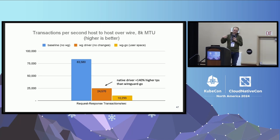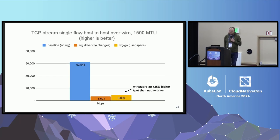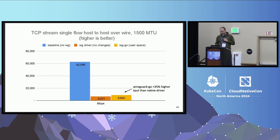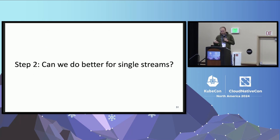For transactions per second — meaning many small packets back and forth — the in-kernel WireGuard implementation has even more transactions per second than WireGuard Go. We were also curious how this looked at standard 1500 MTU, which many people have as default. In this case, the WireGuard Go implementation is actually around 35% better than the in-kernel driver for throughput. However, you don't reach close to 100 gigabit — rather around 60-something gigabit for a single flow. But for many small packets and transactions per second, the in-kernel one is still more than twice as good.